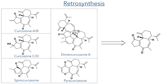So let's start with the retrosynthesis. In this work the authors synthesized five different naturally occurring products, all of them derived from the same tricyclic intermediate. These include the structurally similar Quercusones A, B, C and D, the dimerized compound Dimer Quercusone A, and the compounds Spiro Quercusone and Pyro Quercusone, which are produced by rearrangement reactions altering the carbon framework of the tricyclic system.